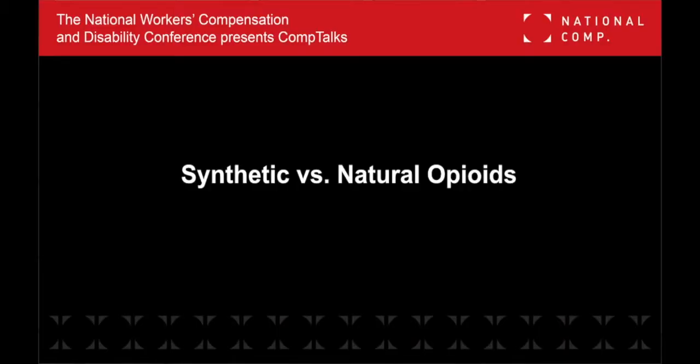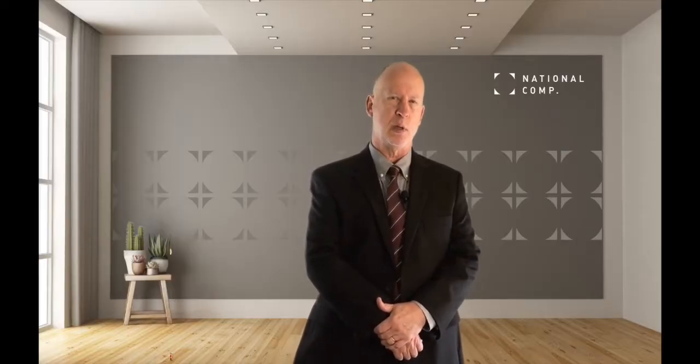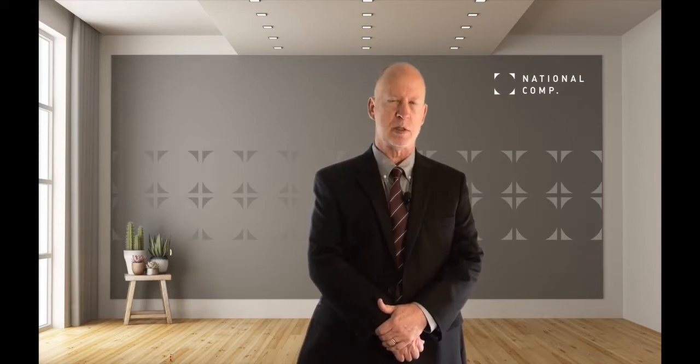And what is fentanyl? Well, it is an opioid known as a synthetic opioid that is 50 times more potent than heroin, 100 times more potent than morphine. Well, where did it come from? I use the term synthetic opioid. So let's talk about that for a moment because it's very important to understand the differences here.